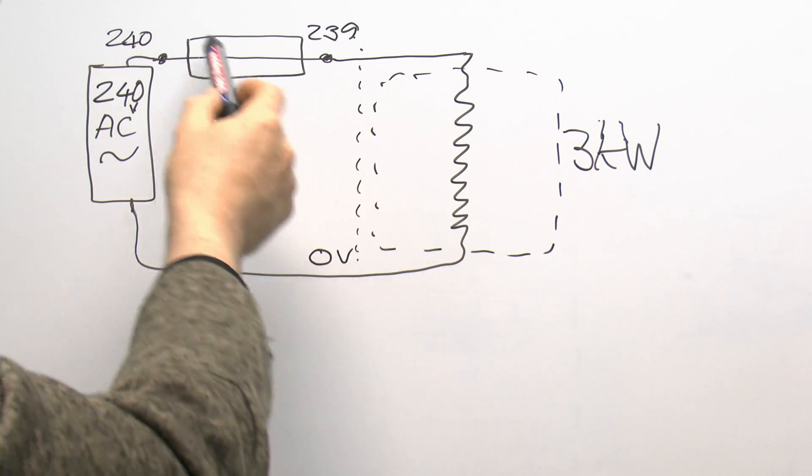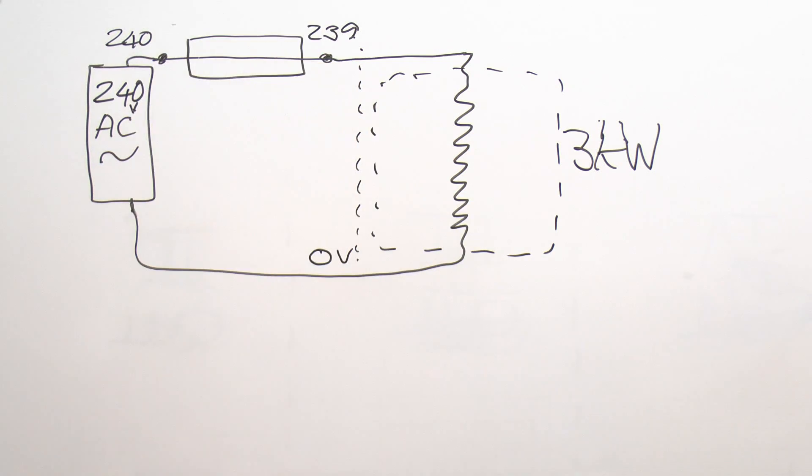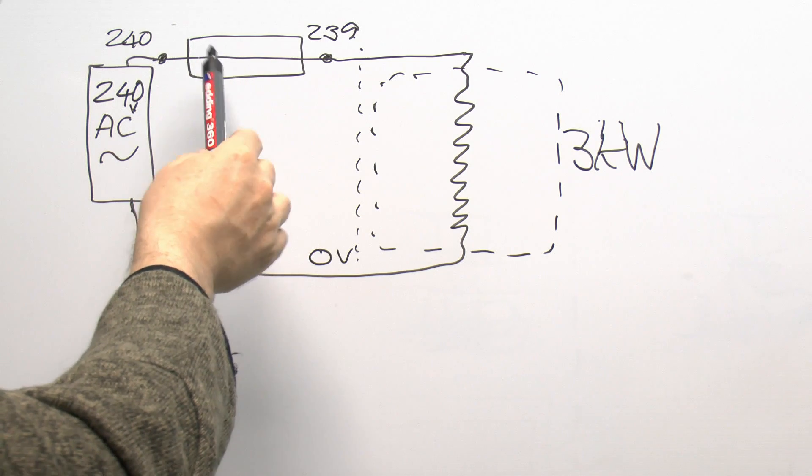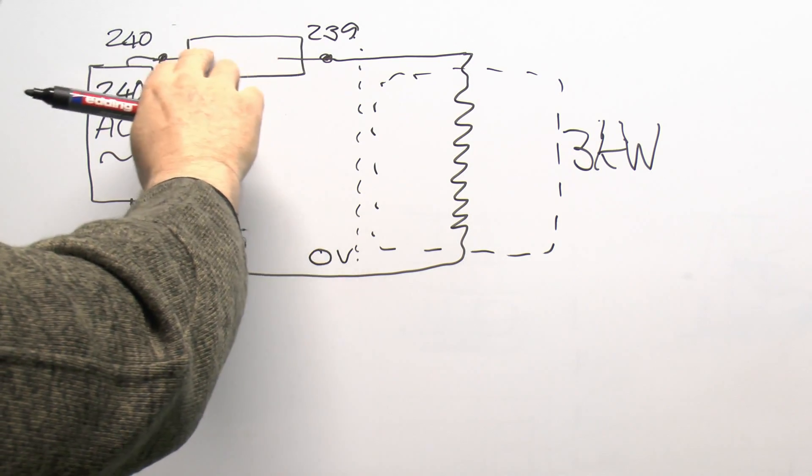So the vast majority of the voltage is going to be across these two points with only say one volt or less across the resistance of the fuse element. Now one major difference with this compared to the direct test with just a couple of volts across is when the fuse actually fails.